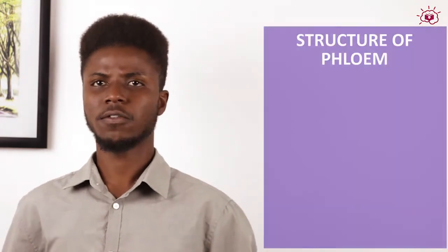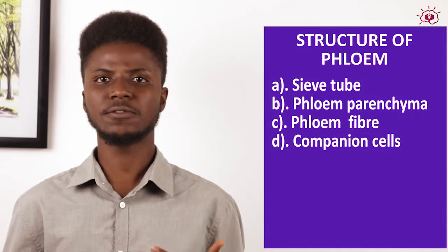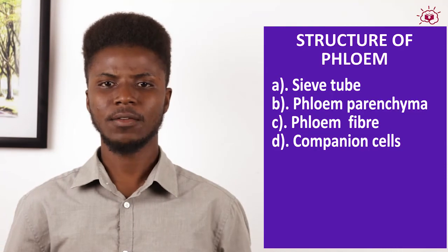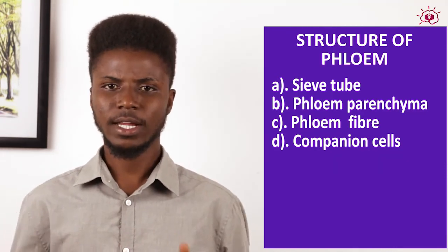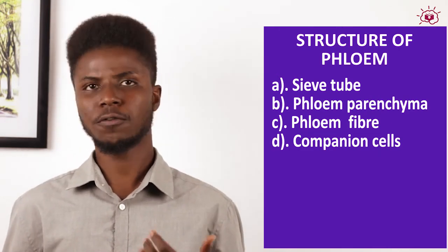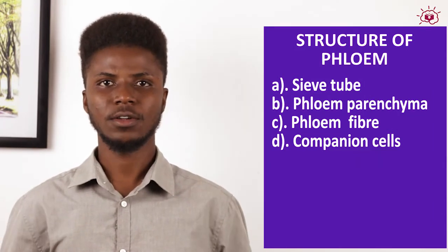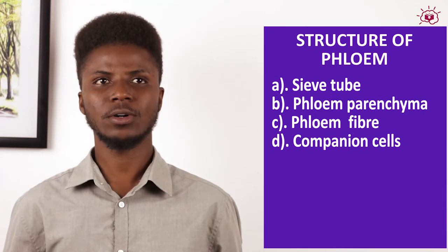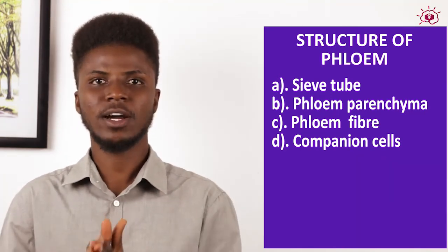The structure of phloem contains cells such as the sieve tube, the phloem parenchyma, the phloem fiber, and companion cells. It conducts manufactured food from the leaf to other parts of the plant, and it also provides support by joining the other tissues in supporting the plant. With this we have come to the end of the lesson, and we will now treat some past questions concerning the topic.